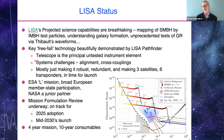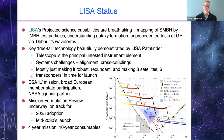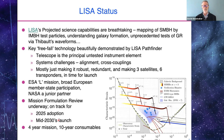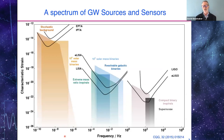The telescope is the principal untested development element, but we think we know how to build telescopes now — 30 centimeters in diameter is modest. There are lots of systems challenges, but it's not trivial to build three satellites with six transponders and get them all to work. This is an ESA L-class mission with broad European member state participation; NASA is a junior partner. The mission formulation review is underway; we're on track for a 2025 adoption, a mid-2030s launch, observing in the late 2030s with a four-year guaranteed mission and 10-year consumables.